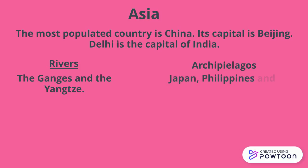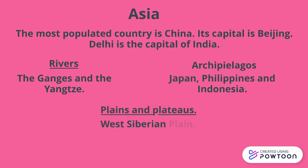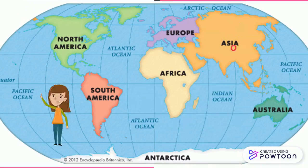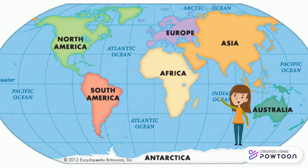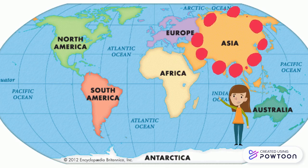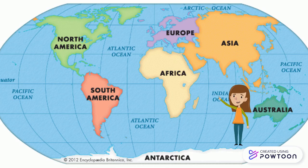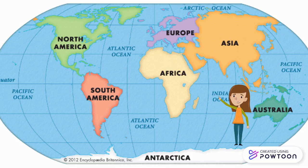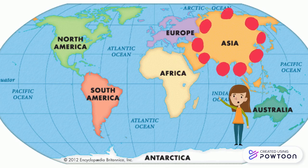Archipelagos: Japan, Philippines, and Indonesia. Plains and plateaus: the West Siberian Plain and the Tibetan Plateau. Here I am to show you where Asia is. As you can see, it's near Europe and between the Indian, the Pacific, and the Arctic Ocean.